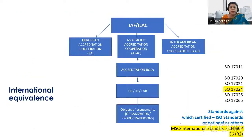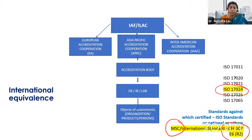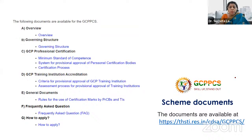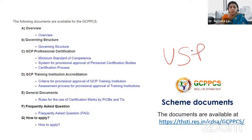The international standard used for the minimum standard of competence is based on ICH E6 R2 presently, and when it moves to R3, it is also based on Indian GCP. The governance structure is strong and all documents are available publicly on the website. The scheme owner's message is: skill up and stand out. In today's race, with India being the most populous country, you need to find your unique selling proposition — skilling up will make you stand out.